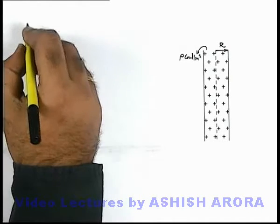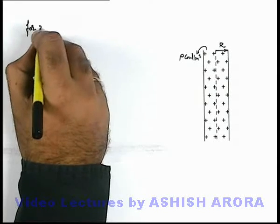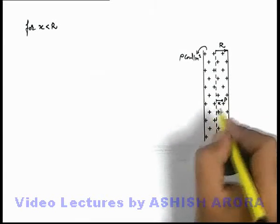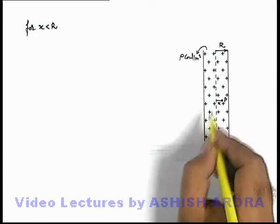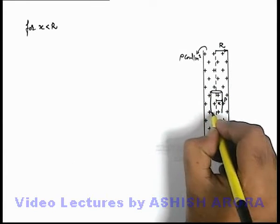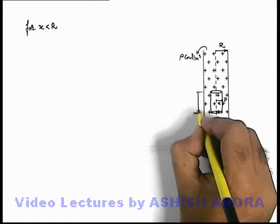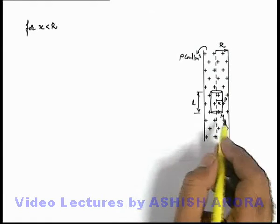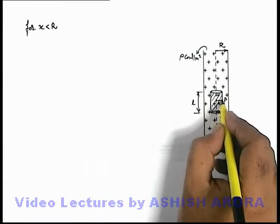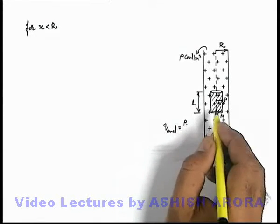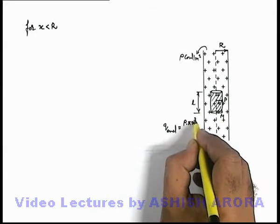Now continuing, for points which are inside the cylinder — that is, x less than r — say we consider a point P inside the cylinder at a distance x from its axis, and we are required to find the electric field at point P. We consider a Gaussian surface which is inside the cylinder, also of length l, and apply Gauss's law on this surface M. The enclosed charge within this region of length l is Q_enclosed = ρ × πx²l.